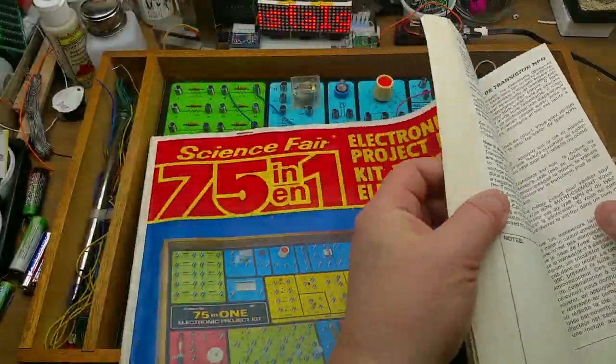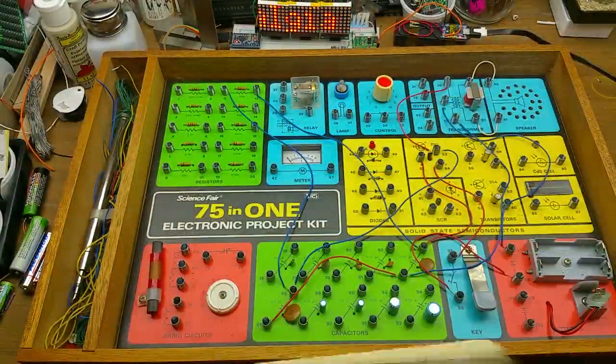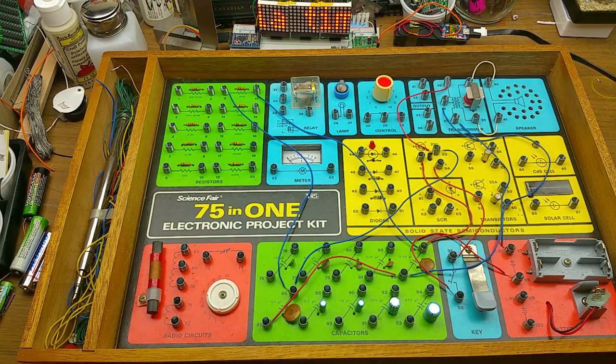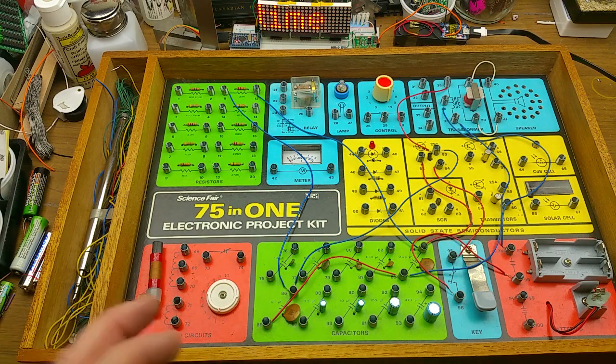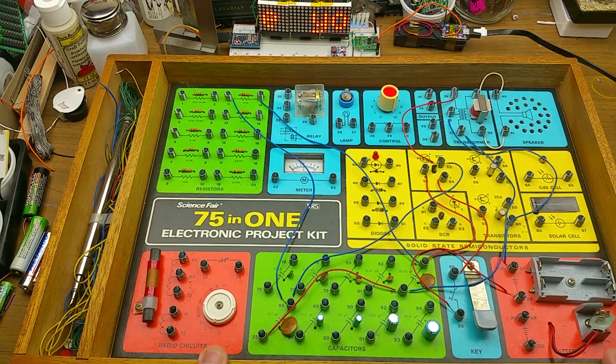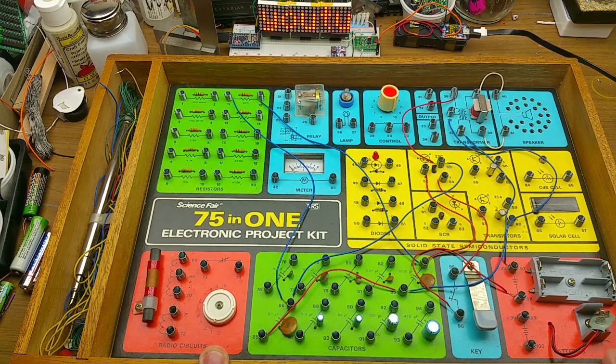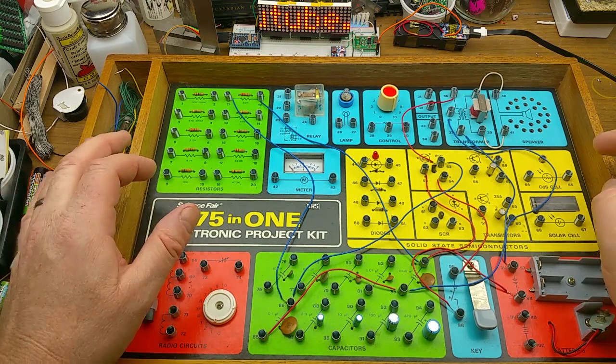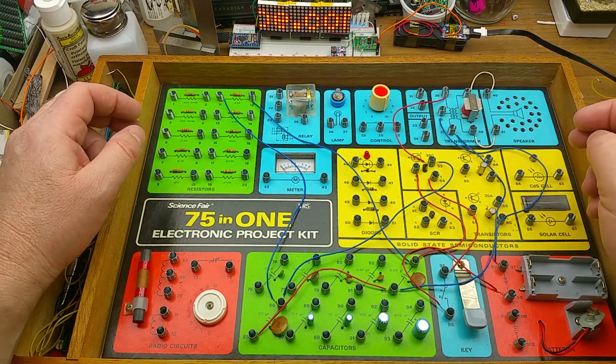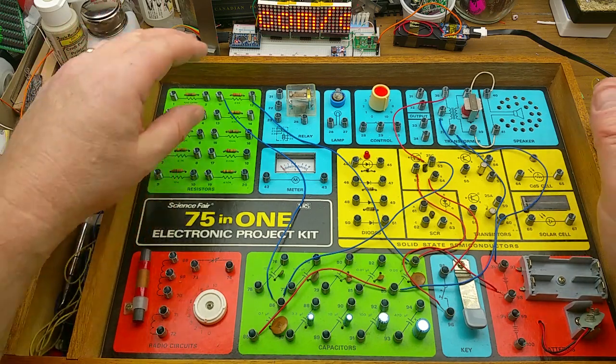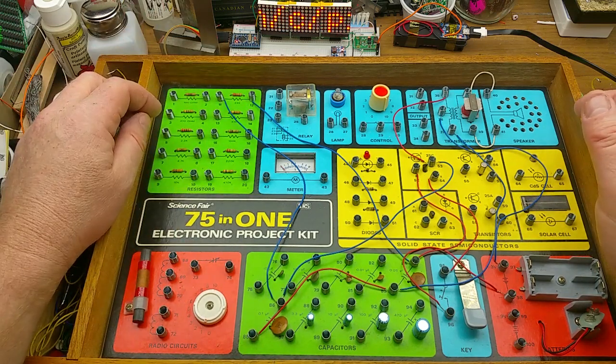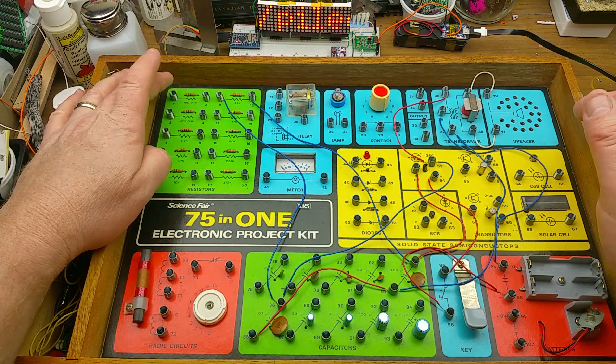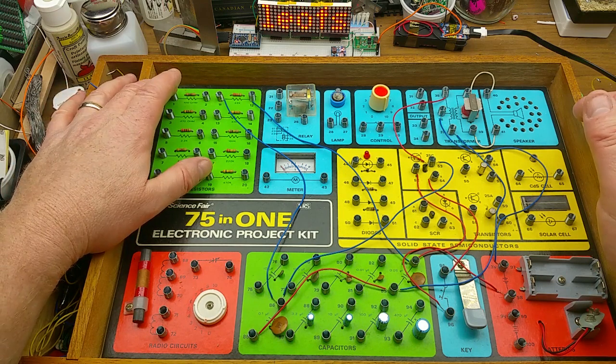That means in the book here they have 75 different projects that you can try yourself. And being the Canadian book, this one is bilingual as well. So that's kind of cool. It's got the remnants of the last project that I did on it still intact. Let me just quickly go through here first. It's got an assortment of resistors over here from 100 ohm up to 470k.